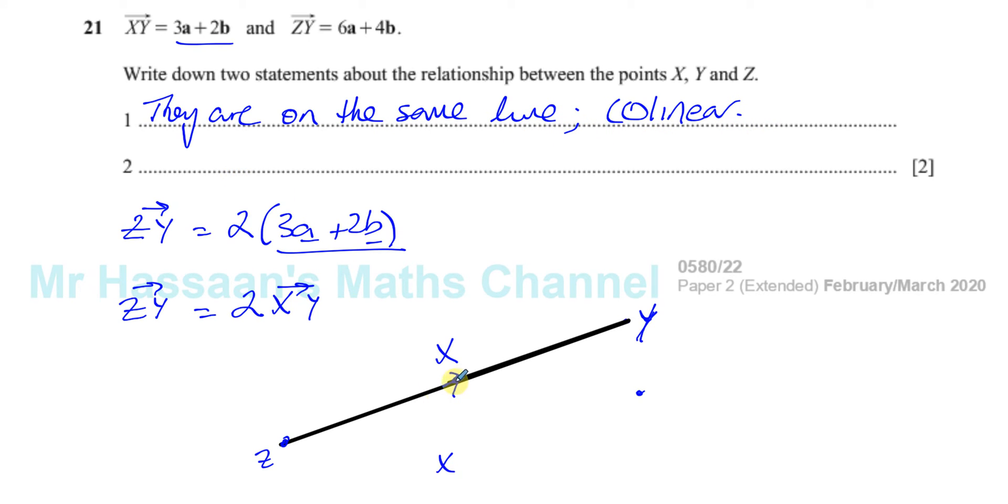And the second thing we can say is, if Z to Y is twice X to Y, that means X is the midpoint of Z, Y. That's how it relates to the other two points. It's the midpoint of the line Z, Y. It's halfway between Z to Y.